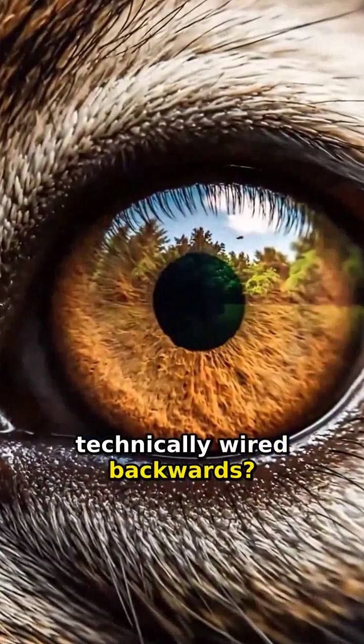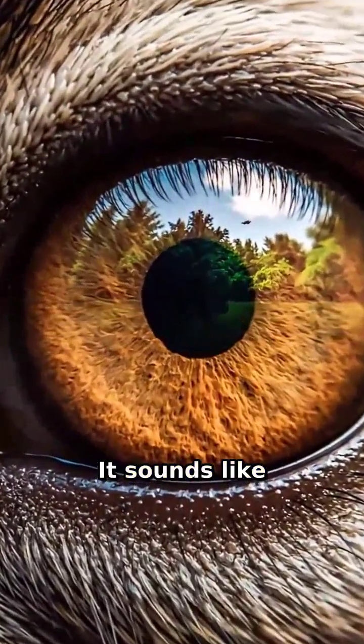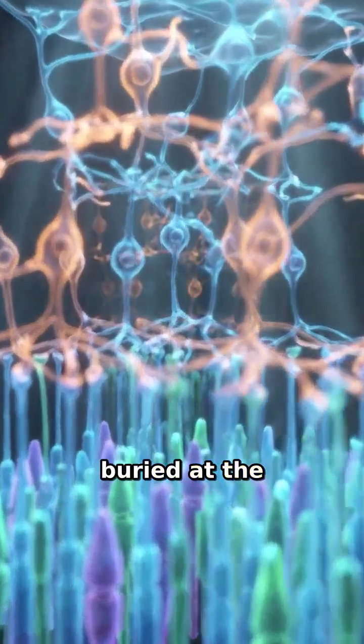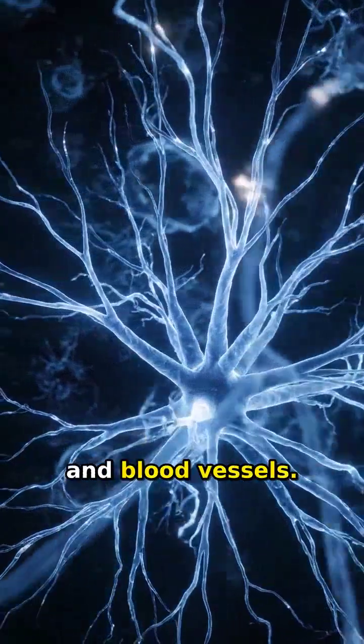Did you know your eyes are technically wired backwards? It sounds like a massive design flaw, but in the human retina, the sensitive light-detecting cells are actually buried at the very back, hidden behind a thick forest of neurons and blood vessels.